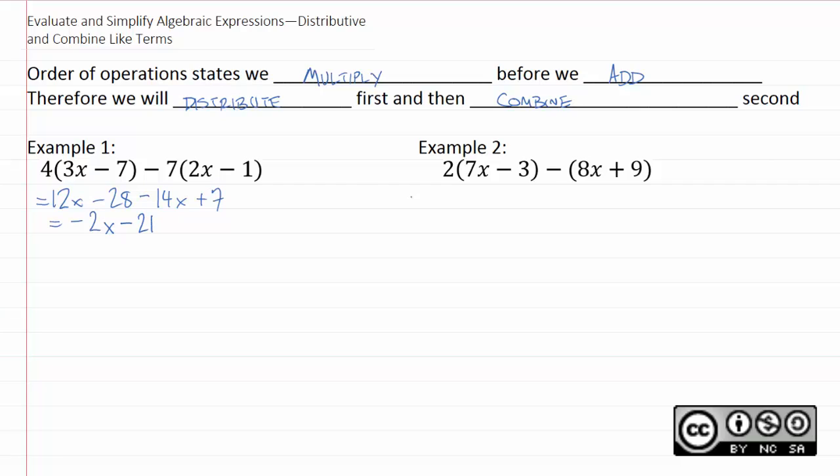We'll do the same thing over here with example 2. Now one thing you're probably going to see, I call it an invisible 1. Remember, if you don't see a number in front of your parenthetical, you can just assume it is 1.